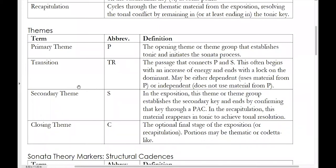Next up is the secondary theme, abbreviated S. The secondary theme is the theme responsible for establishing the secondary key — that's where the name comes from. The goal of the secondary theme is to confirm that secondary key through a perfect authentic cadence. In the recapitulation, the secondary theme will be transposed to appear in tonic, and so it's really about S achieving tonal resolution in the recapitulation.